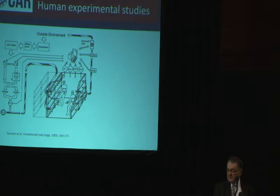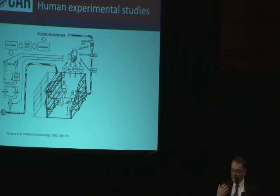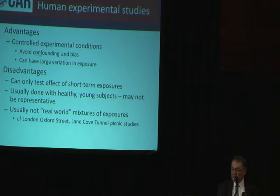The next thing is human experimental studies. Most of these are done in a laboratory setting where you can put a healthy volunteer in an isolated room breathing clean air, carefully control the environment, and make a number of physiological measurements. Because you can carefully control the environment, it's possible — just like with animal experiments — to avoid any problems with confounding bias, and you can induce quite large variations in exposure.